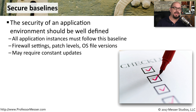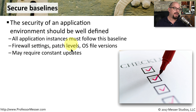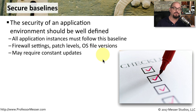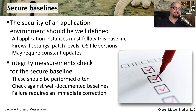When you're deploying this new application, how can you confirm that it's secure? There should be a set of baselines that define exactly how this application should perform. You should know exactly what firewall settings are required for this application to operate, the patch levels of the operating system that must be installed to maintain security, and all of the different operating system file versions that are required for this application to be secure. There may be constant updates to this baseline as the operating system patches change and as the application is updated. Once you've created the secure baseline for this application, you can then test against that baseline periodically and make sure that all of the components used with this application are maintaining this minimal secure baseline.